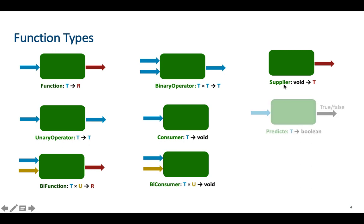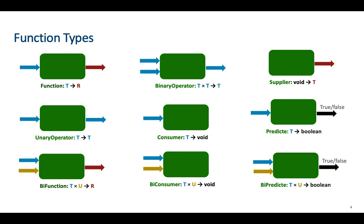When a function has one input and its output type is boolean, such a type is called Predicate in Java. When predicates have two inputs they are called BiPredicate or Binary Predicate. These are the main function types that we need to remember.